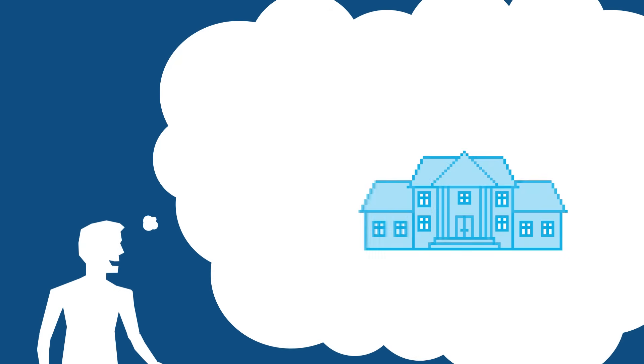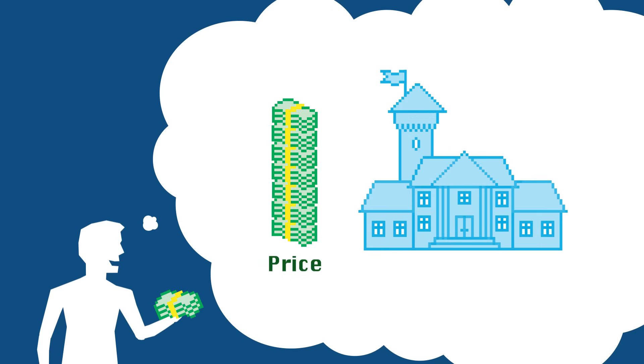An optimization problem is a problem where you are trying to search for the best configuration out of many many different possible combinations. An example of this is say you're trying to build a house — you've got a fixed budget to spend but there are many many different things you would like to have in your house.